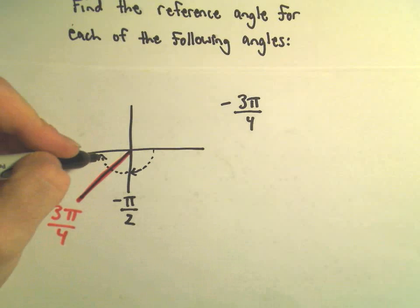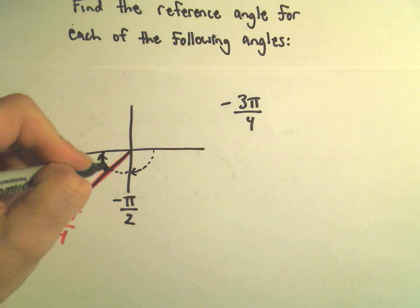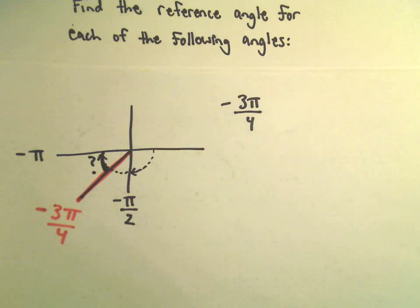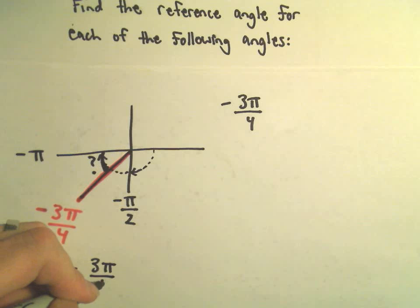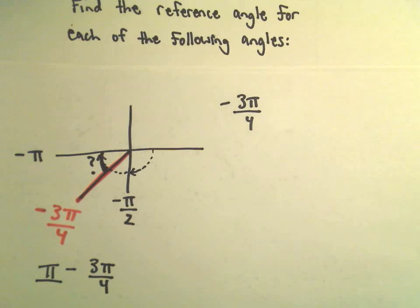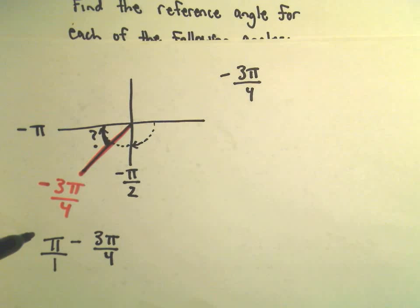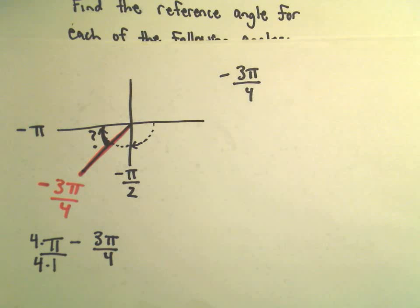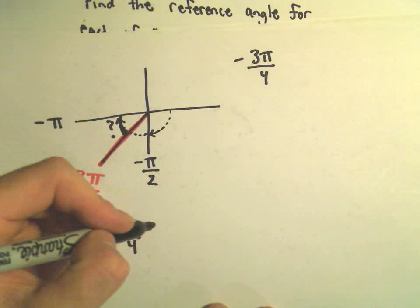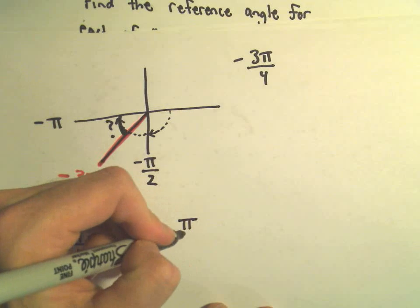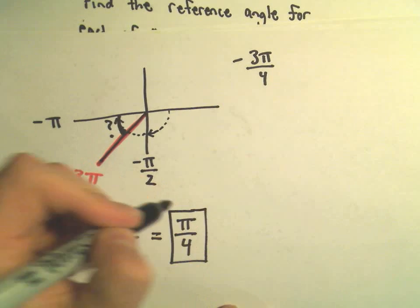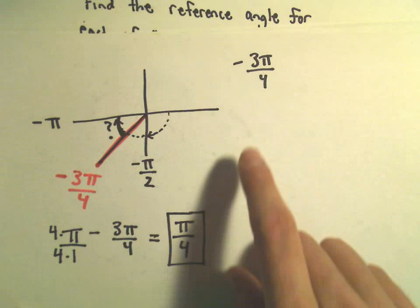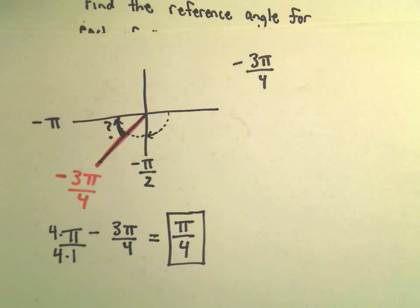All I'm really trying to do is sort of find this angle here in between there. I'm just going to make them both positive. I'm going to take π radians minus 3π over 4. If I get common denominators, I can multiply top and bottom of my first fraction by 4. That would give me 4π minus 3π or π over 4. We would say that π over 4 is the reference angle for negative 3π over 4.